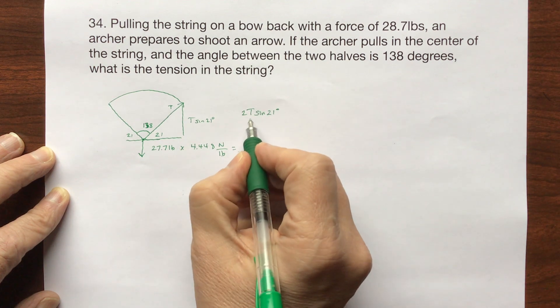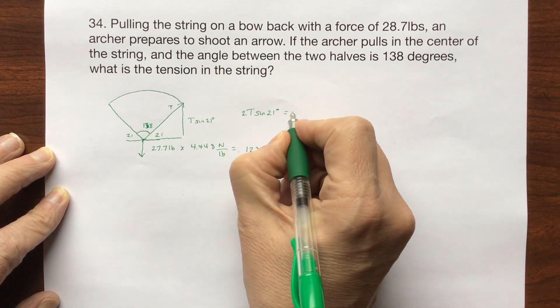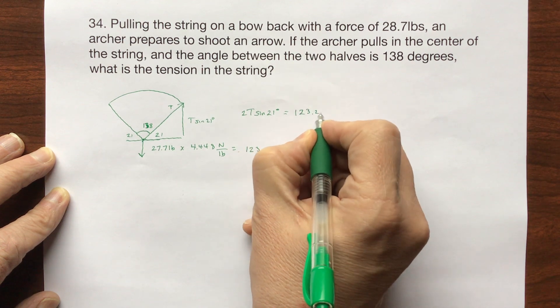So that means that 2 times T times the sine of 21 degrees equals 123.2 newtons.